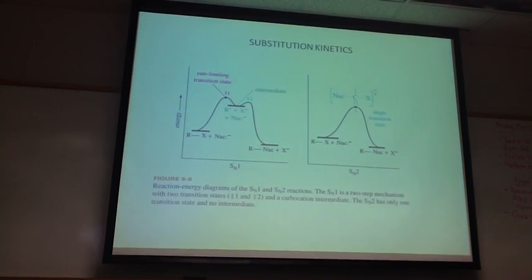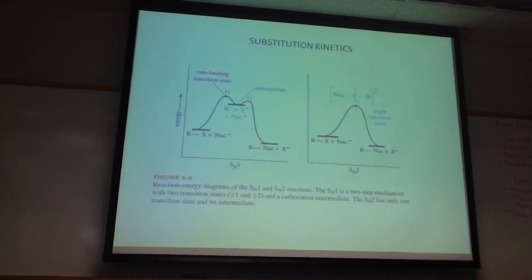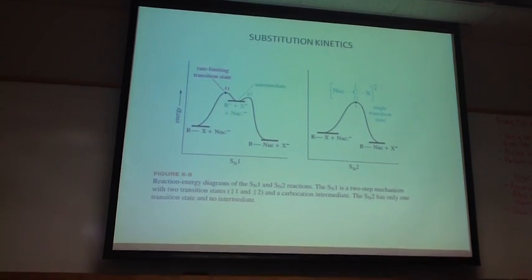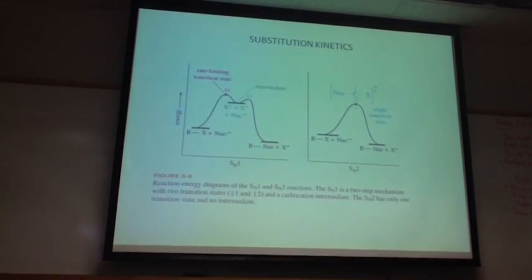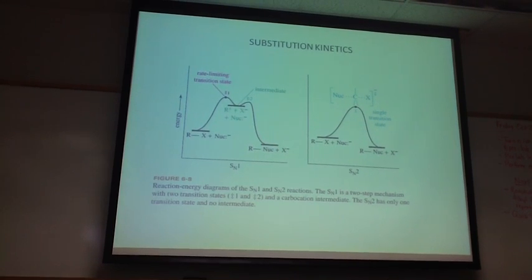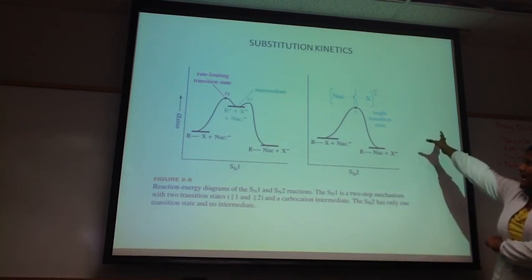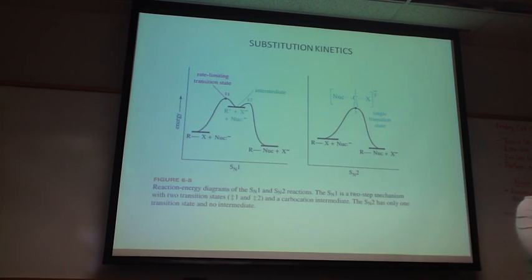These are some of the reaction coordinates for SN1 and SN2. Which one's SN1? The first one. Yeah, so what we can see is we have two steps. So you have two intermediates. And one of the differences is it's also one step. That means that you have no intermediates. You only have a transition state. And what's the difference between a transition state and an intermediate?